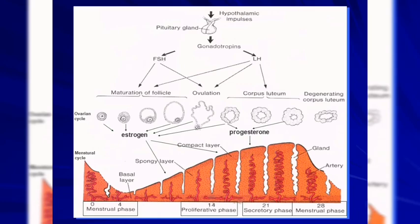If there is no embryo, the corpus luteum degenerates — we see degeneration of the granulosa and theca lutein cells. This reduces estrogen and progesterone from those cells. The corpus luteum degenerates, and this triggers the menstrual phase of the cycle, which indicates that there is no pregnancy. The stratum functionalis is shed, initiating a new cycle.